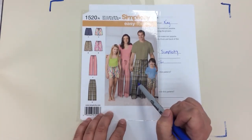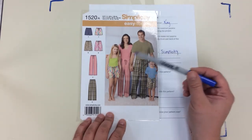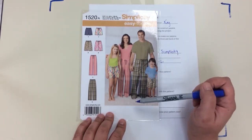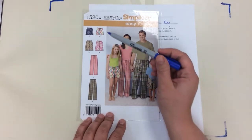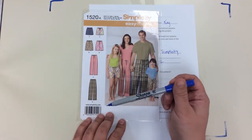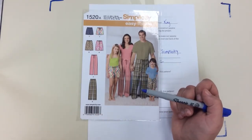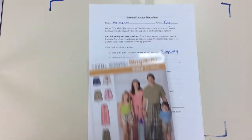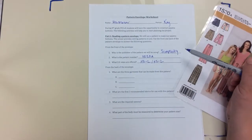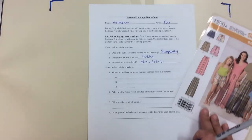Other information on the front of the pattern - you're going to see a picture or a drawing of what it's going to make, and usually it breaks it down into each piece that the pattern makes. A lot of pattern envelopes contain information to make multiple different items. So on your worksheet you should have Simplicity 1520A, extra small to large, extra small to large.